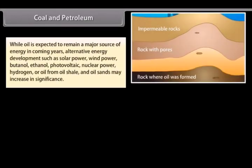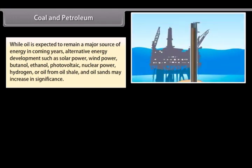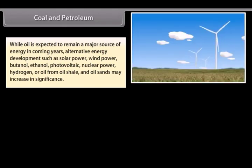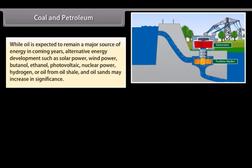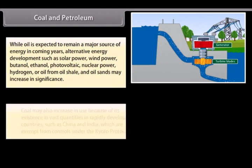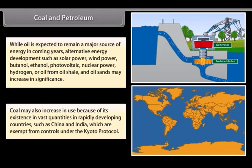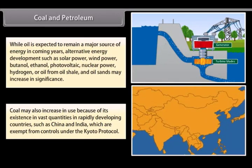While oil is expected to remain a major source of energy in coming years, alternative energy development such as solar power, wind power, butanol, ethanol, photovoltaic, nuclear power, hydrogen, or oil from oil shale and oil sands may increase in significance. Coal may also increase in use because of its existence in vast quantities in rapidly developing countries such as China and India, which are exempt from controls under the Kyoto Protocol.